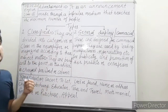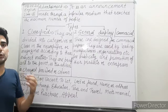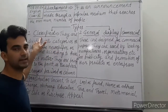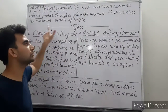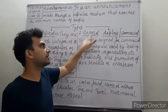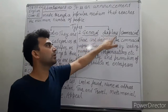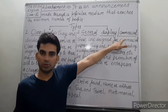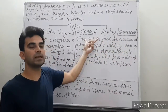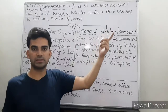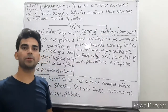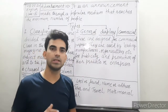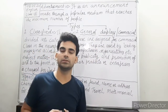Now, there are two types of advertisement. The first one is classified. The second one is commercial, also called display or general advertisement. You are free to use any of these names.